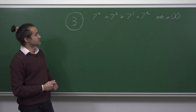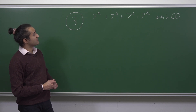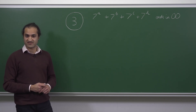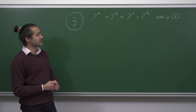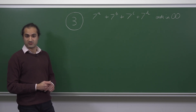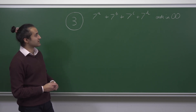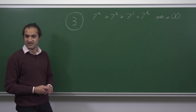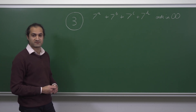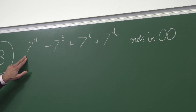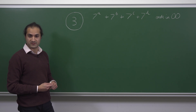We're asked to find the number of possibilities for 7^a + 7^b + 7^c + 7^d to end in two zeros — in other words, to have remainder zero when divided by 100 — where a, b, c, and d are single digits. It's a good idea to look at the possible remainders of just one term, for example 7^a, when divided by 100.